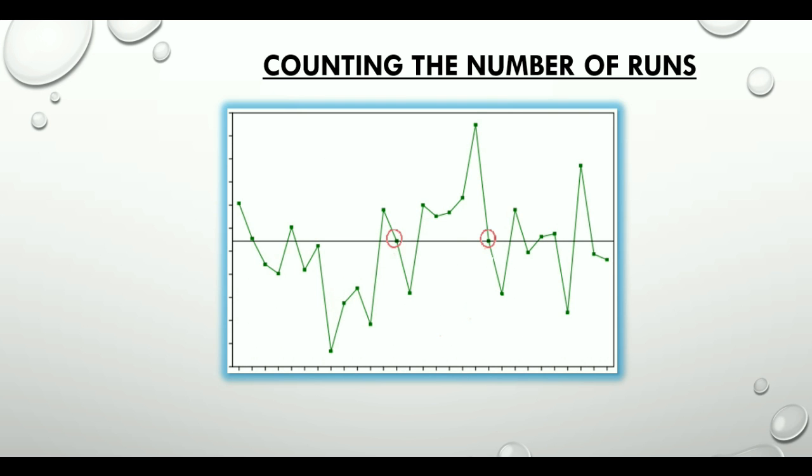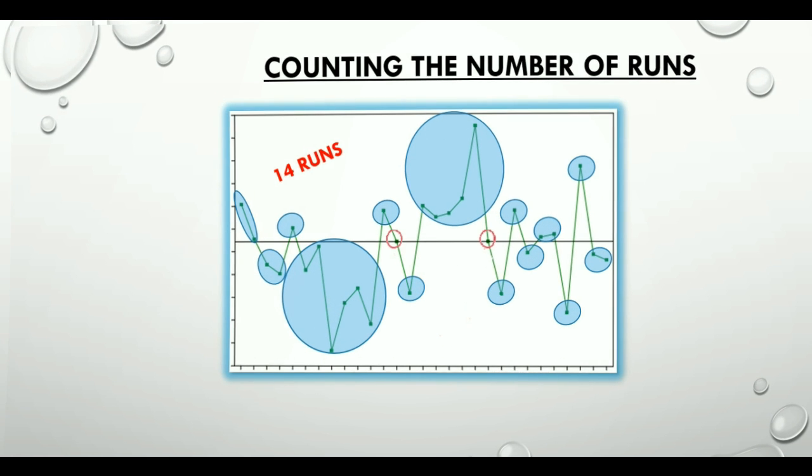Now let's look at the run chart rules. This is of utmost importance because these rules let you make meaningful inferences from the available data. For these rules to be valid and give concrete results, at least 15 or more data points are mandatory. There are four patterns of non-randomness displayed by run charts.